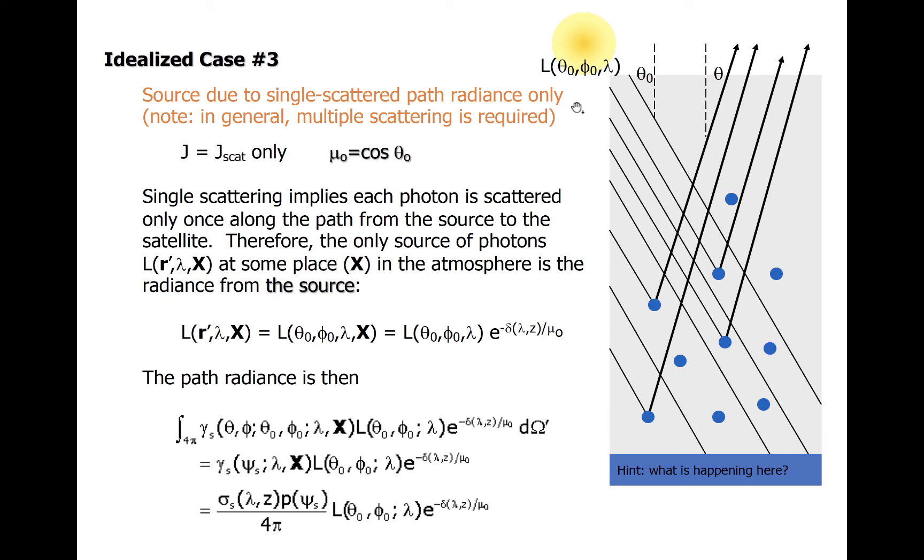Suppose the radiance from the Sun is described by L with angles theta naught and phi naught related to the angle of the incoming radiation. After radiation is scattered, it exits the atmosphere at some new angle theta and phi. Thus, at a given point in the atmosphere, the radiation in an arbitrary point X is the incoming solar radiation reduced by the transmissivity of the layer above the point where it is scattered.